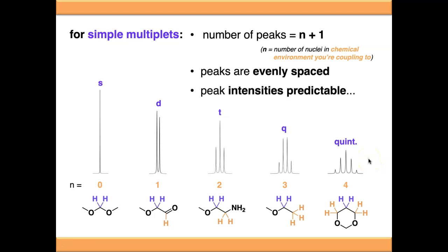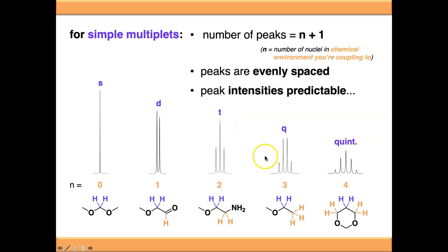You'll notice that the peaks have different intensities. In a doublet it's approximately 1:1, in a triplet it's 1:2:1, in a quartet it's 1:3:3:1, and so on. These are predictable using something called Pascal's triangle.